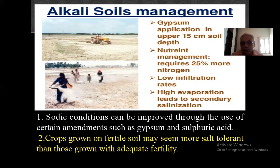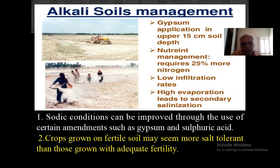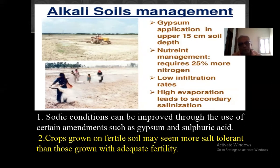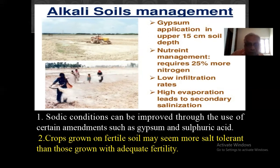Low infiltration rate: when you apply irrigation water or rain water, that water will not move downward due to dispersion of soil particles — that is deflocculation. High erosion leads to secondary salinization. In arid regions like parts of Madhya Pradesh you find saline alkali soil with little vegetation, leading to more wind erosion, and you find sand dunes in Jaisalmer and other parts of Rajasthan.